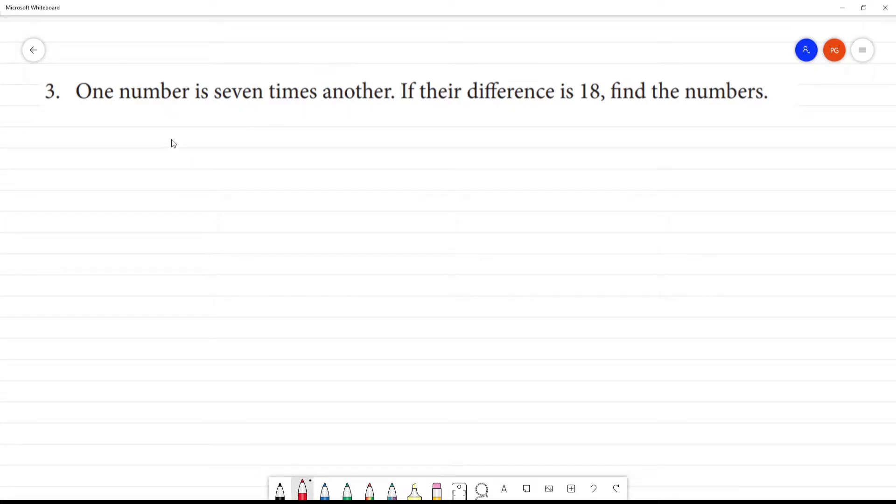One number is seven times the other. So we can write number equals x.